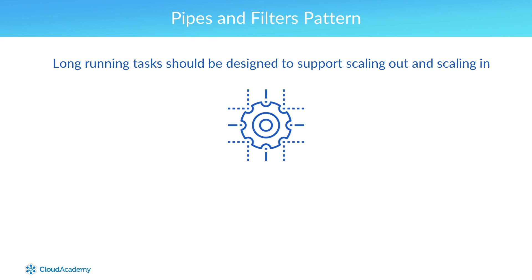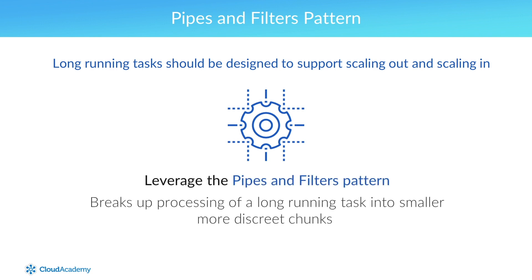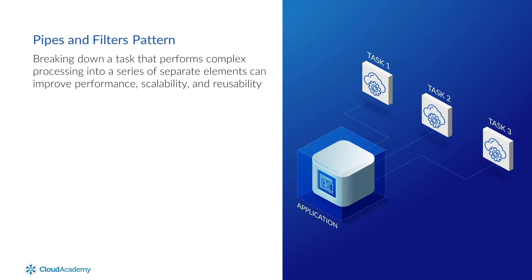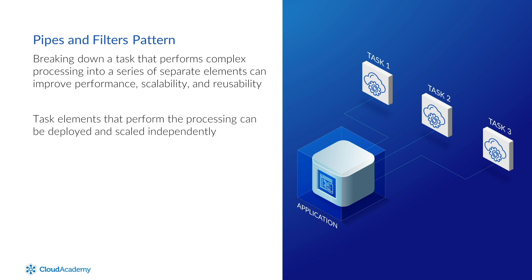Ideally, you should leverage the pipes and filters pattern to break up processing of a long running task into smaller, more discrete chunks. By breaking down a task that performs complex processing into a series of separate, reusable elements, you can improve performance, scalability, and reusability, while allowing task elements to be deployed and scaled independently.